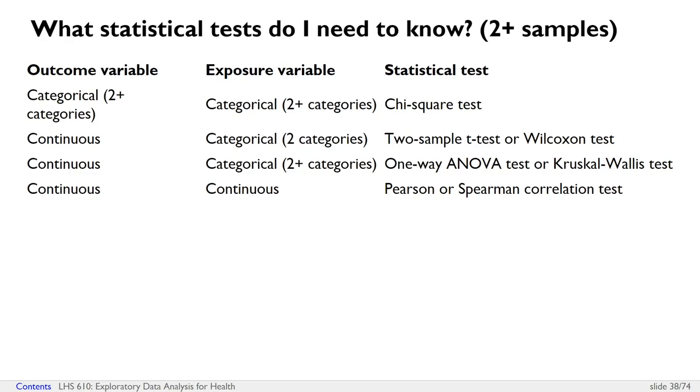Notice that when you run a chi-square, you might notice it actually says Pearson's chi-square test. When I write Pearson test, I'm really referring to the Pearson correlation test, not to the chi-square test. Just realize those are two different tests, even though they both have the word Pearson in them.